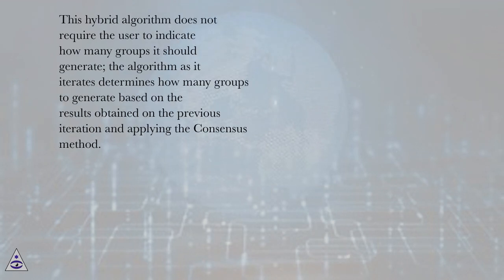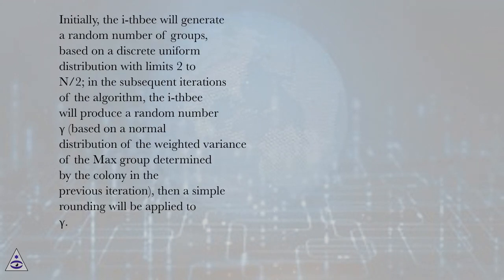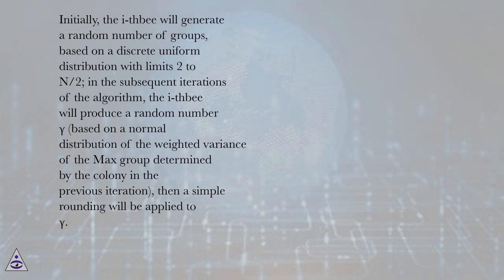This hybrid algorithm does not require the user to indicate how many groups it should generate. The algorithm, as it iterates, determines how many groups to generate based on the results obtained in the previous iteration and applying the consensus method. Initially, the algorithm will generate a random number of groups based on a discrete uniform distribution with limits 2 to n/2. In subsequent iterations, it will produce a random number gamma based on a normal distribution of the weighted variance of the max group determined by the colony in the previous iteration, then a simple rounding will be applied to gamma.